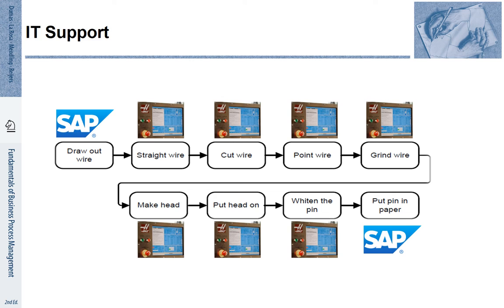Today, complex work in commercial organizations is not only organized by the help of division of labor — it is information systems that play an increasingly important role, in two ways. First, information systems help us by supporting individual steps of the process. Second, information systems help to coordinate between different steps of the process. For this reason, information systems are so important for business process management, and we will discuss them at various stages of the book.